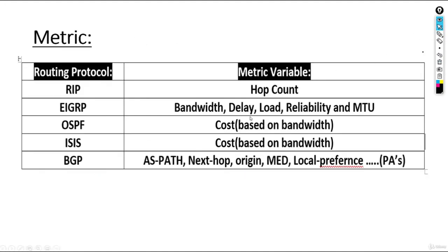BGP is special — it has different path attributes used as metric: AS path, next-hop, origin, MED, and local preference. There are four main path attributes for BGP path selection.